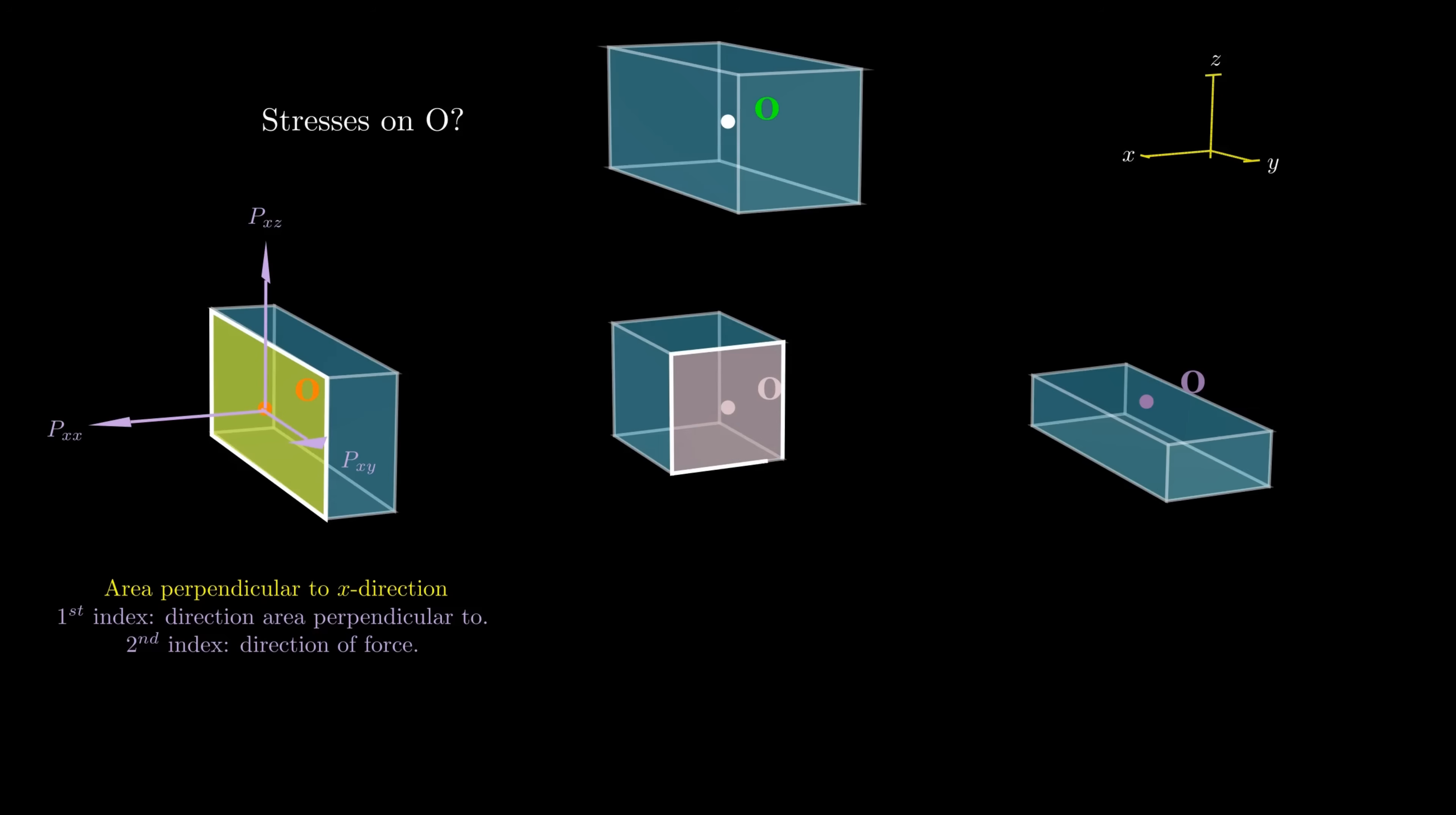The idea is similar for the second cross-section. The second cross-section is perpendicular to the y-direction. Once again, we say that at the point O, which is now on the back half of the beam, that point O generally experiences a force per unit area from the front half of the beam. This force from the front per unit area can be broken up into the components p sub yx, p sub yy, and p sub yz. This time the first subscript on the components of my p is y because my cross-section is perpendicular to the y-direction.